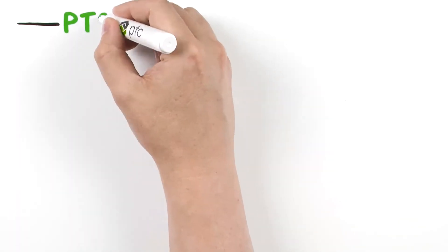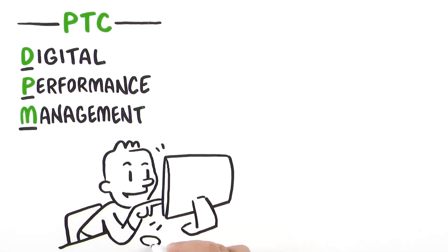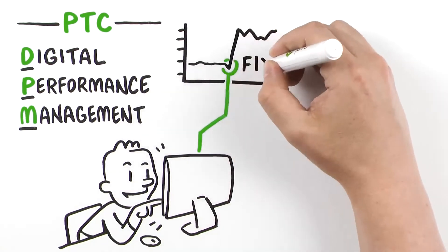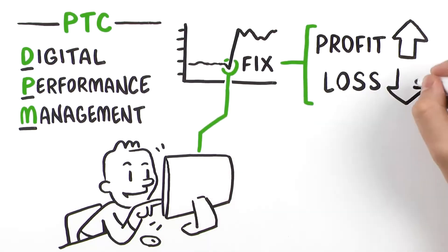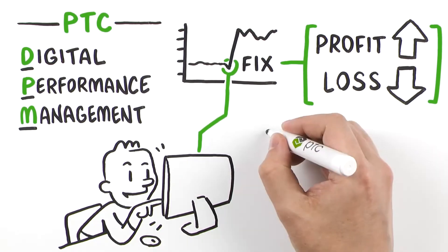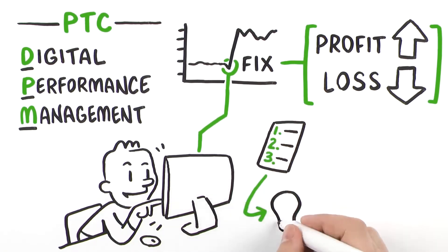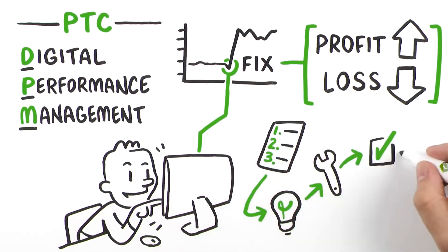And PTC's Digital Performance Management gives you the tools to track the performance of the fix and the impact on the plant P&L for a genuine closed-loop approach to continuous improvement, so your team can prioritize, analyze, improve, validate, and focus on your continuous improvement progress.